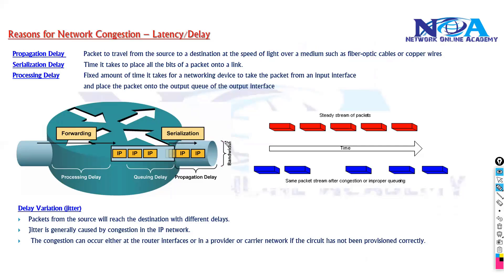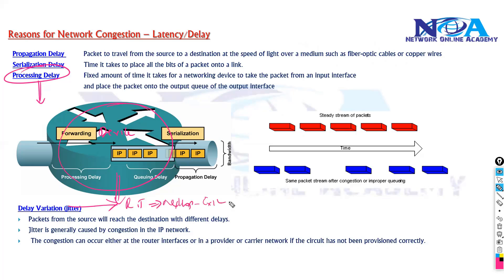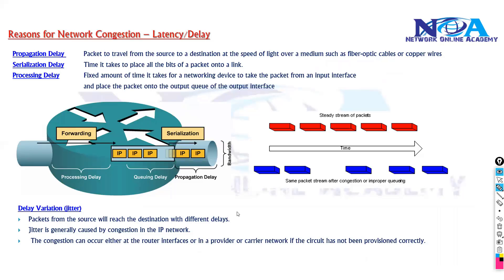Similarly, there is processing delay, which depends on the device being used — how much time it takes to process and forward the packet out of the interface. For example, it receives a packet, checks the routing table, checks the next hop, identifies the exit interface, and then forwards it. That is the processing delay.